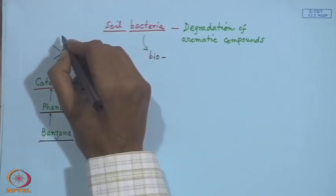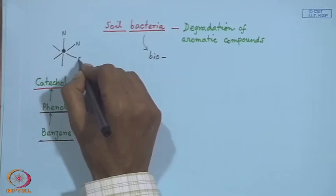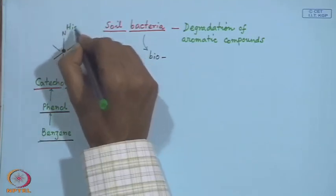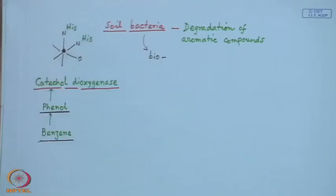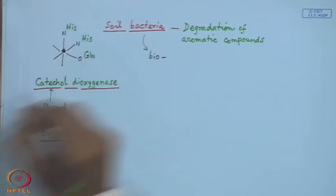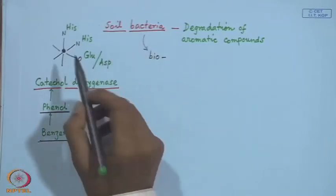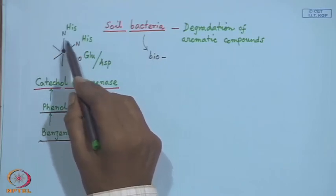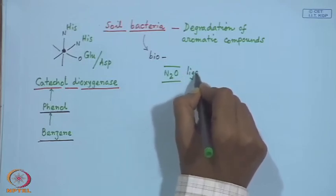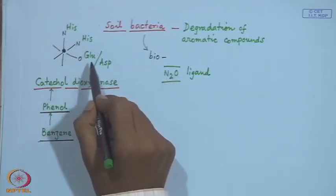The mononuclear system, from the corresponding protein side chain, provides histidine nitrogen, another histidine nitrogen, and oxygen from the acid end — from glutamate or aspartate or any other carboxylate. So you get a tridentate N2O-type ligand: two nitrogen donors from histidine residues and one from the corresponding glutamate or aspartate residue.